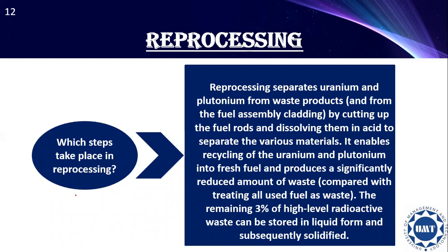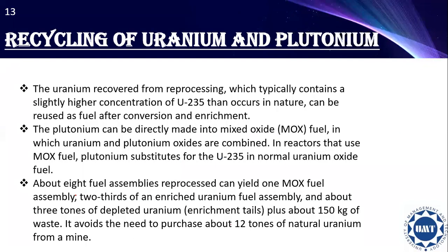The next step is reprocessing. It separates uranium and plutonium from waste products by cutting up the fuel rods and dissolving them in acid to separate the waste materials. It enables recycling of uranium and plutonium into fresh fuel and produces a significantly reduced amount of waste. The remaining 3% of high-level radioactive waste can be stored in liquid form and subsequently solidified.